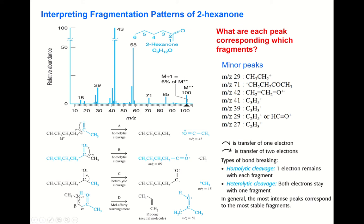Regarding arrow notation: a half-headed arrow (fish-hook arrow) with only one barb represents transfer of one electron, used for homolytic cleavage. A full double-headed arrow represents two-electron transfer. Homolytic cleavage means one electron remains with each fragment; heterolytic cleavage means both electrons stay with one fragment.